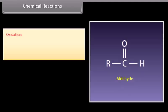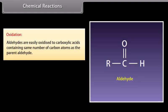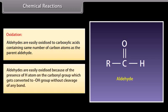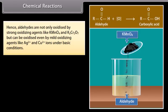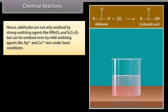Oxidation: aldehydes are easily oxidized to carboxylic acids containing the same number of carbon atoms as the parent aldehyde. Aldehydes are easily oxidized because of the presence of a hydrogen atom on the carbonyl group, which gets converted to an OH group without cleavage of any bond. Hence, aldehydes are not only oxidized by strong oxidizing agents like potassium permanganate and potassium dichromate, but can be oxidized even by mild oxidizing agents like Ag2+ and Cu2+ ions under basic conditions.